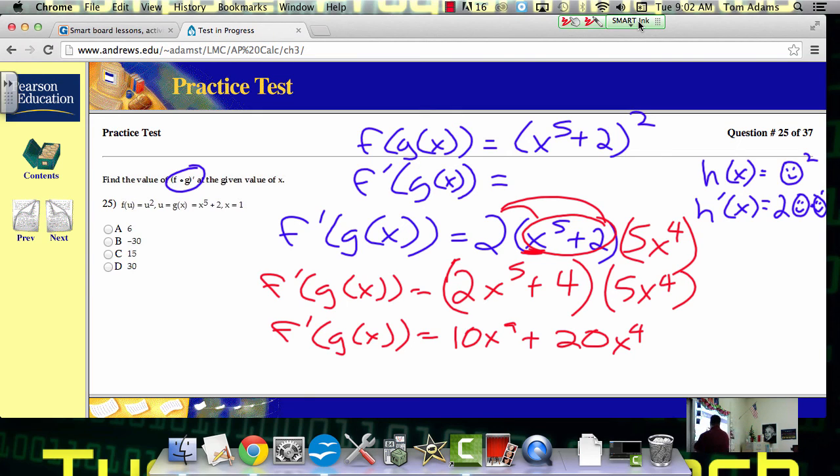Okay. So now, now the only thing I need to do is plug in x equals 1. Okay. So when I do that, by the way, what's 1 raised to any power? 1. 1. So what I end up with, f prime of g of 1, it's going to end up being 10 plus 20. 30. Which is 30. Okay. So let's see if that's right.